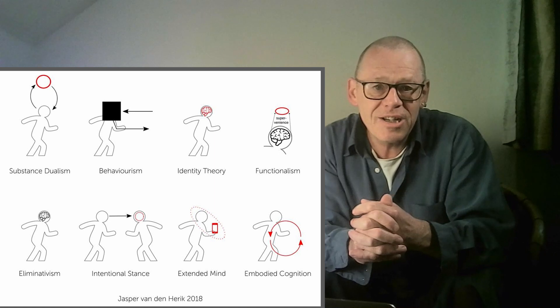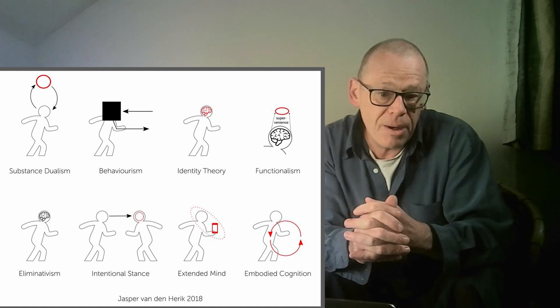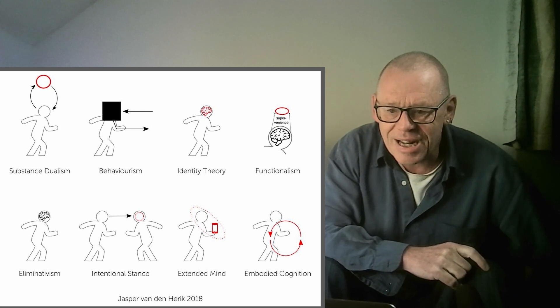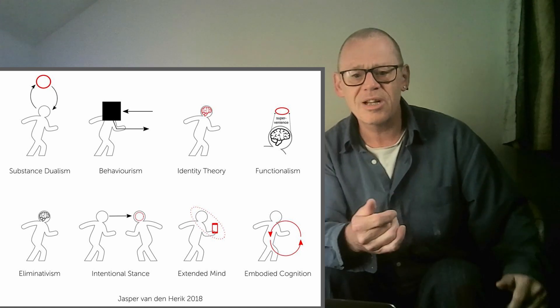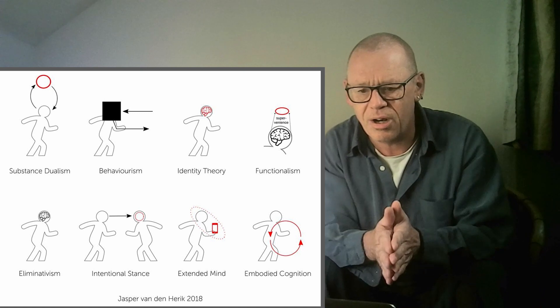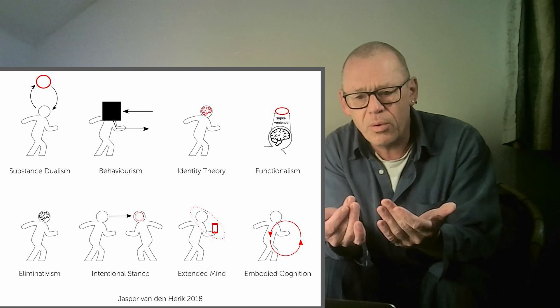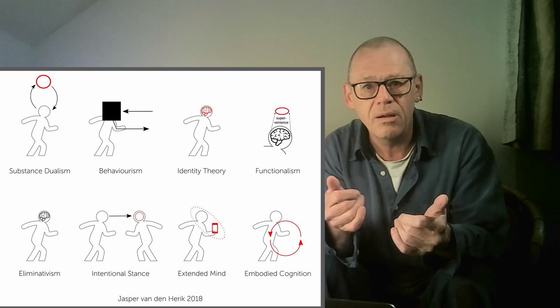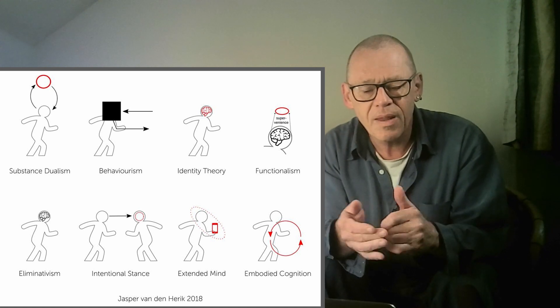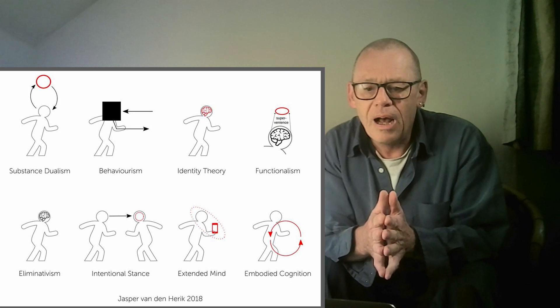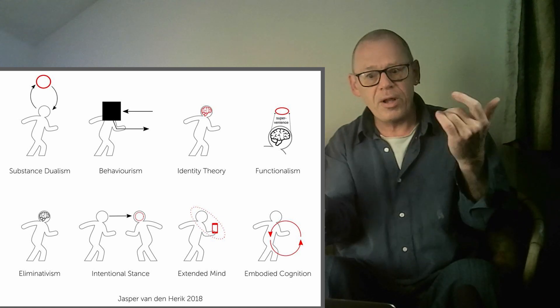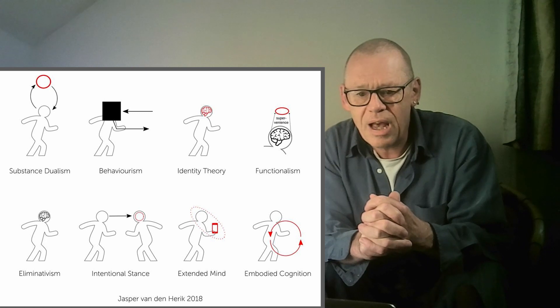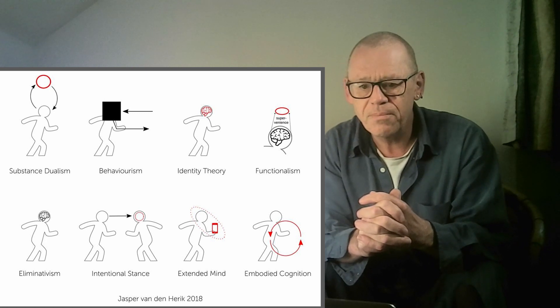Jasper van den Heri came up with this nice little graphical figure to show some of the contemporary positions available within cognitive science. There is substance dualism, behaviorism, identity theory, functionalism and eliminativism and the intentional stance. All of those sort of belong in what we covered in the introduction to cognitive science module. Extended mind hypothesis is put forward here. It makes us think very seriously about technology and the supportive role of the world in effectively supporting what it is that we do. And then you see a nice graphic of embodied cognition, which we'll be opening up and exploring in many ways. But notice the position of the red indicators in all of these little graphs. I think it's very useful.